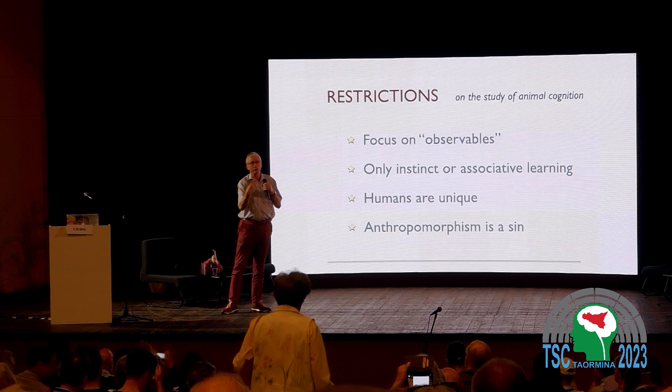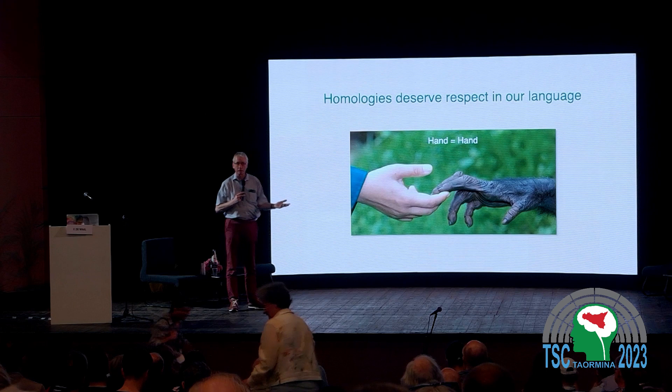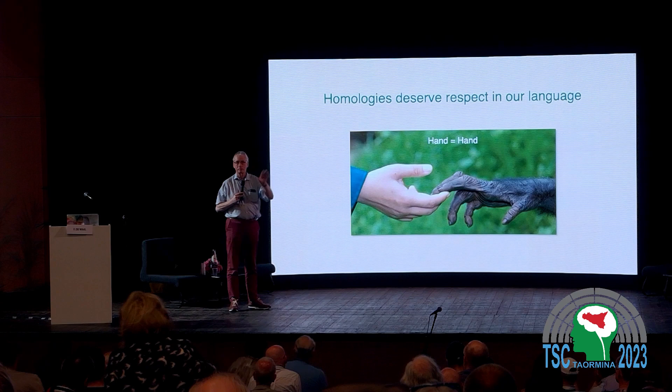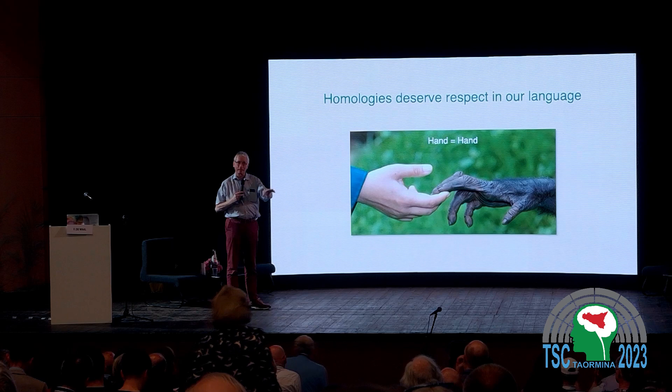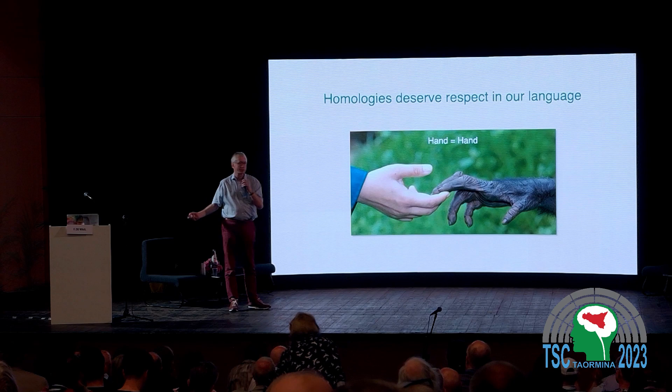Many people still feel that way, and you were supposed to avoid anthropomorphism. I have no problem with anthropomorphism — I work with animals that are very close to us, so it's fairly logical. But I think in our language we should respect homologies — traits that are similar because of common descent. For example, the hand of a human and the hand of a chimpanzee are structurally and functionally extremely similar, deriving from a common ancestor. You cannot call it a front paw.